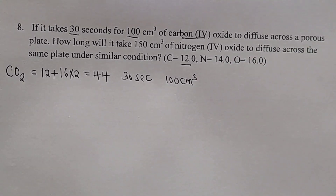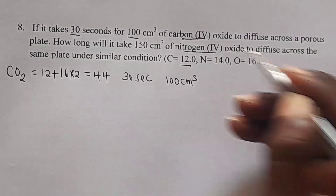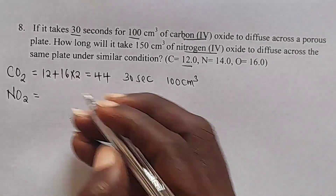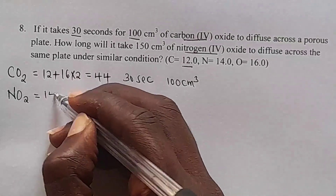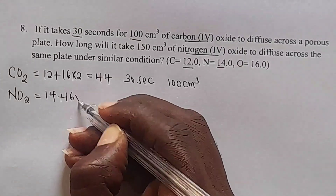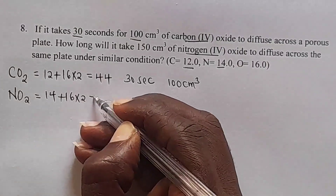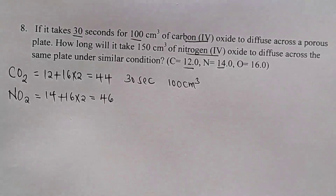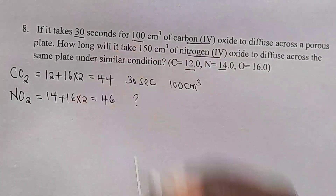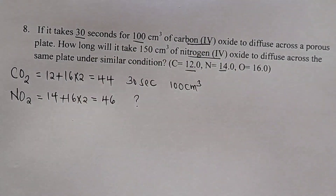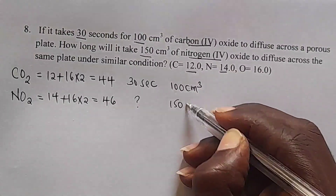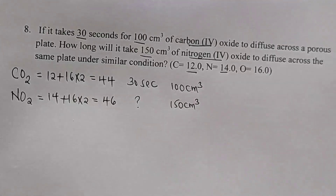We go to the other gas, nitrogen dioxide, written as NO₂. Nitrogen is 14, so: N = 14.0 plus 16 times 2, giving a molecular mass of 46. We don't have the time because we are told to find how long it will take. The volume is 150 cm³ of nitrogen dioxide.